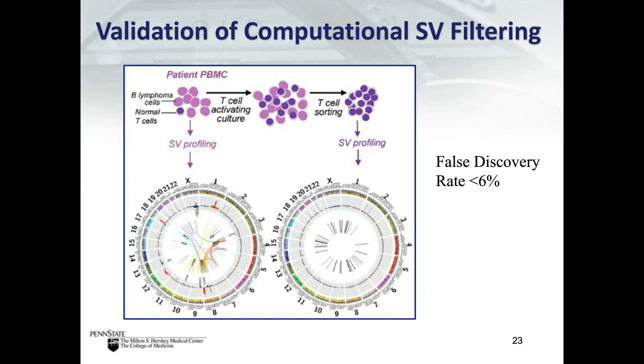By comparing structural variants in the patient sample to those in normal T cells — which lacked all translocations and inversions present in the leukemia sample — the team was able to validate their bioinformatic pipeline and calculate a false discovery rate for structural variation of less than 6%.